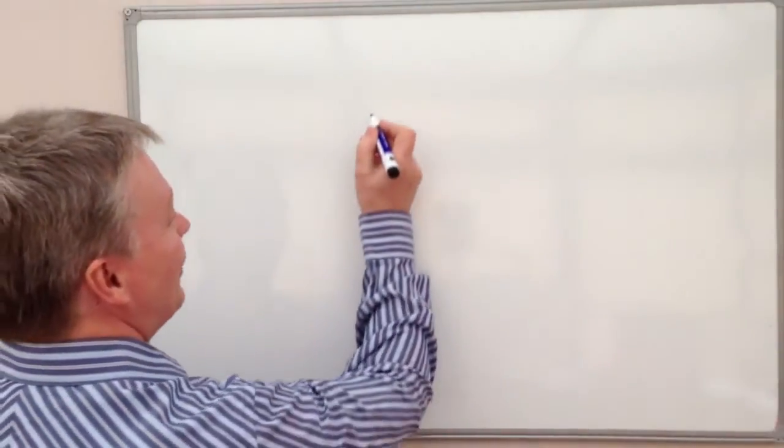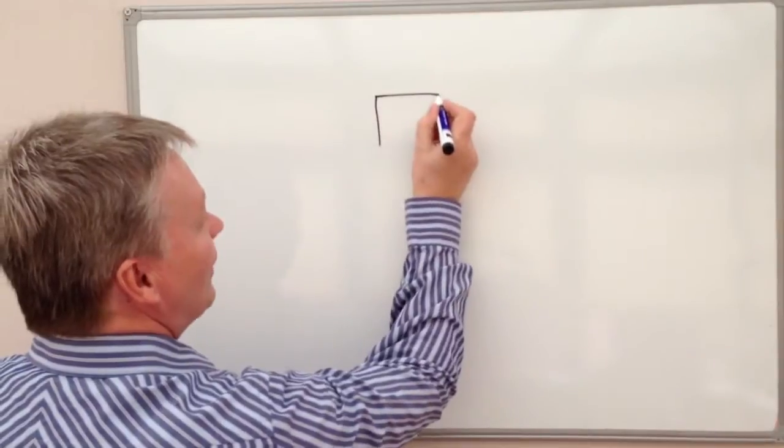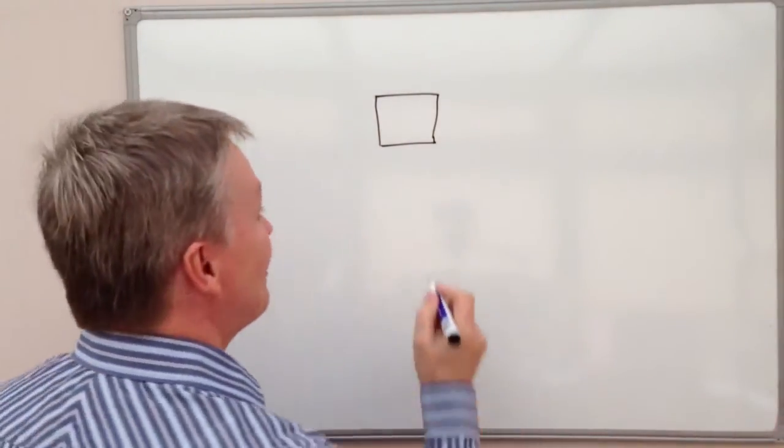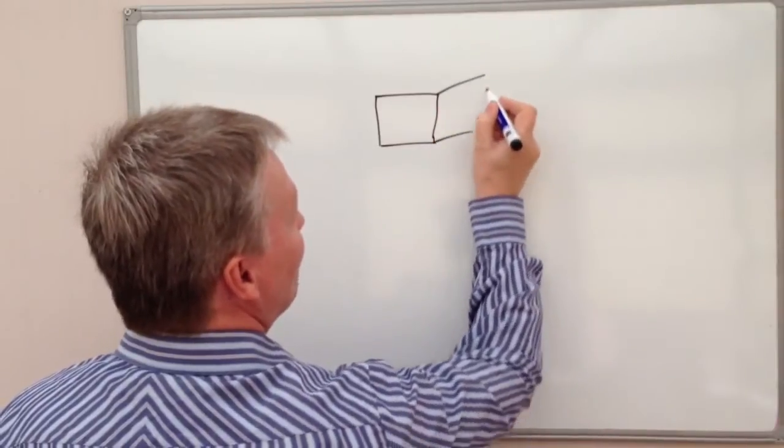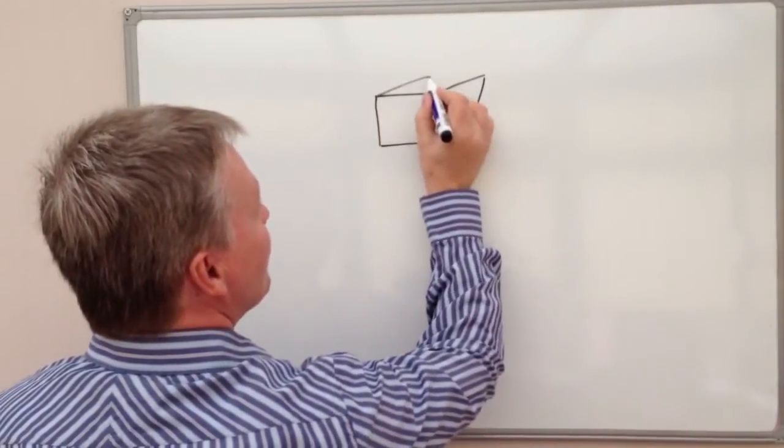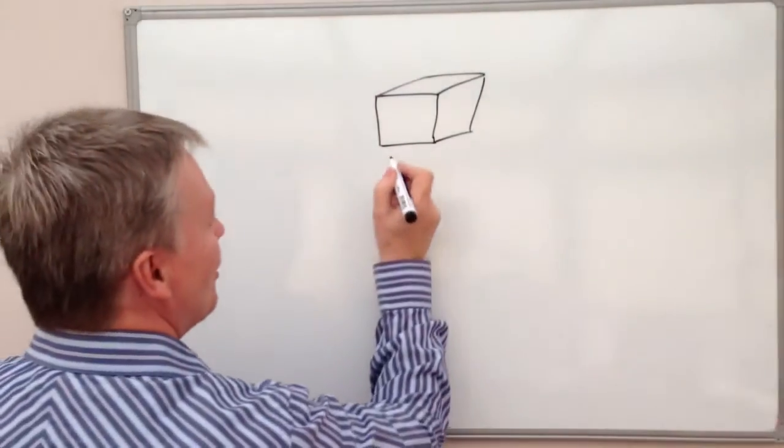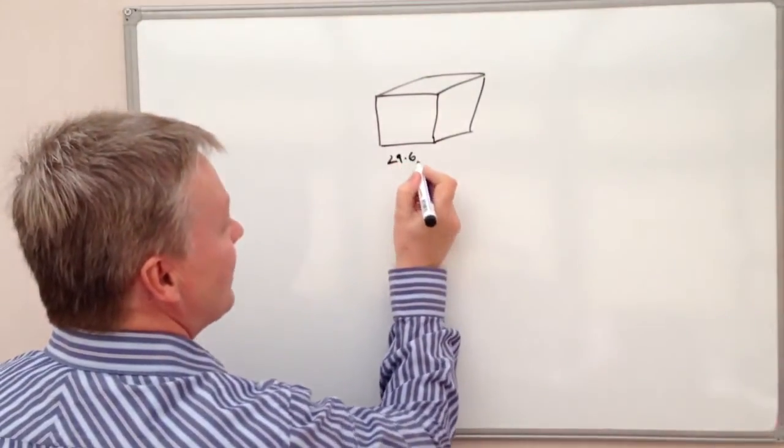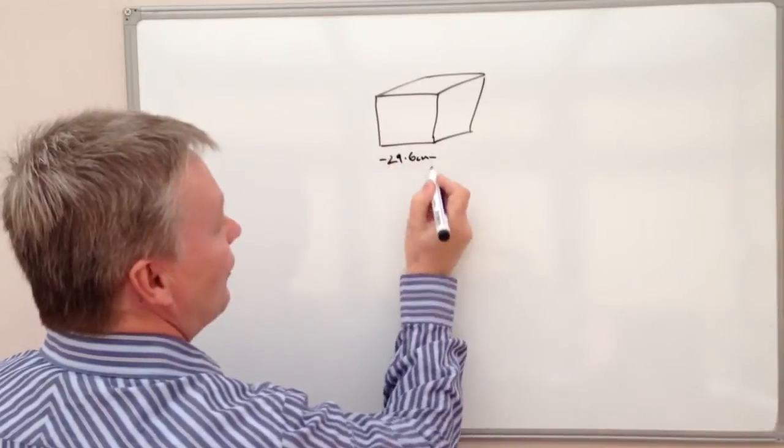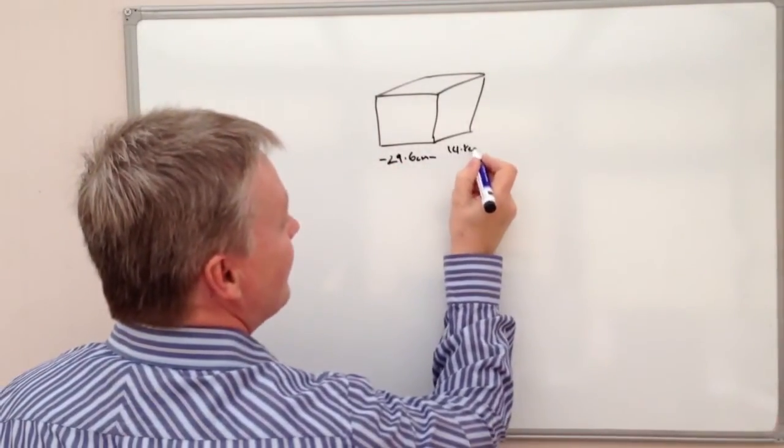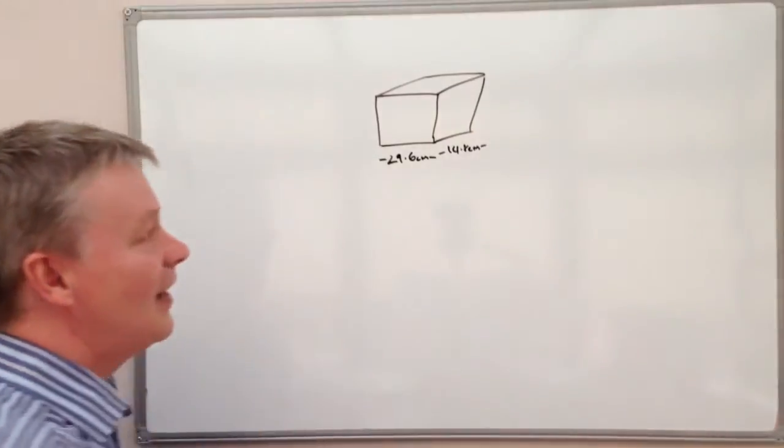Let me give you the information that we've got. It's a straightforward cuboid fish tank, so it's a rectangular prism. This particular fish tank has dimensions of 29.6 centimeters along there and 14.8 centimeters along there, and it's got an overall height of 10.4 centimeters.